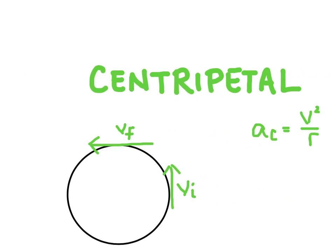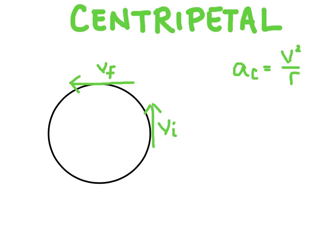The last type is centripetal acceleration, which always points toward the center of the circle. The equation for centripetal acceleration comes from calculus, which I'll derive in a later video. Centripetal acceleration is based on tangential velocity — that's why we use 'v' here rather than omega, which is the angular velocity symbol. The change in velocity, delta V, equals v final minus v initial.